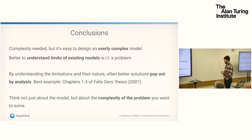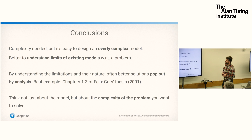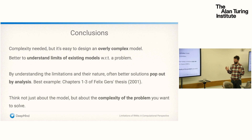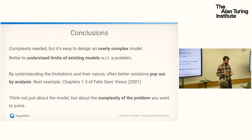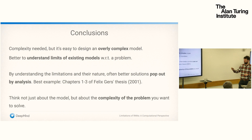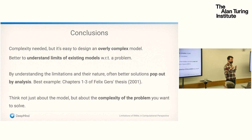To conclude: added complexity is needed to take us beyond finite state machines or the very large relaxations of finite state machines that RNNs are currently modeling. If we really want to move beyond approximating data distributions we don't fully understand, to something that can learn a generalizable program in its weights, we need more structure. But it's also easy to design an overly complex model, so a lot of thought needs to go into the level of complexity you want. It's better to understand the limits of existing models with regard to specific problems and use that to guide research — asking what is the minimum unit I need?